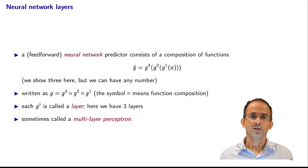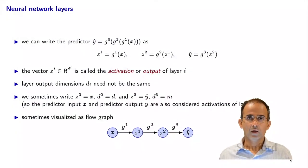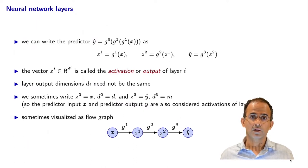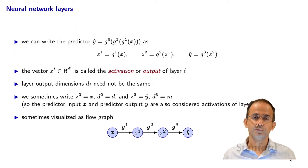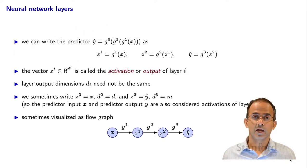We might write this using composition notation: g is g3 composed with g2 composed with g1, where the composition operator is denoted by a circle. Some people would call such a neural network a multi-layer perceptron. We often write the predictor composition in terms of individual variables: z1 is g1 of x, z2 is g2 of z1, and y-hat is g3 of z2. Each of these vectors z-i is called the activation or the output of layer i, where layer i is the function g-i. z-i is a vector with dimension d-i, which depends on the layer, and those layer dimensions need not all be the same — sometimes they grow and sometimes they shrink depending on the application.